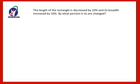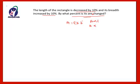The next question: the length of a rectangle is decreased by 10 percent and its breadth is increased by 10 percent. What percent is its area changed? The area of a rectangle equals length × breadth. If breadth is constant, area is directly proportional to length, and vice versa.